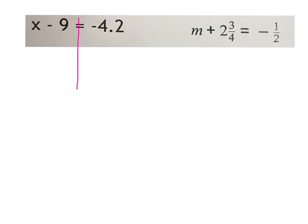To do that I'm going to have to get rid of this minus 9, and we're going to use the inverse operation. Since right now it's subtracting 9, the opposite of that is adding 9. So I'm going to add 9 to both sides — remember you want to keep it balanced. The minus 9 plus 9 cancels out to zero, so I get x on that side.